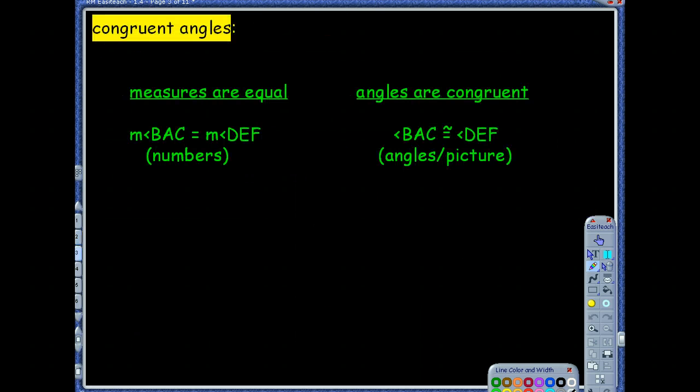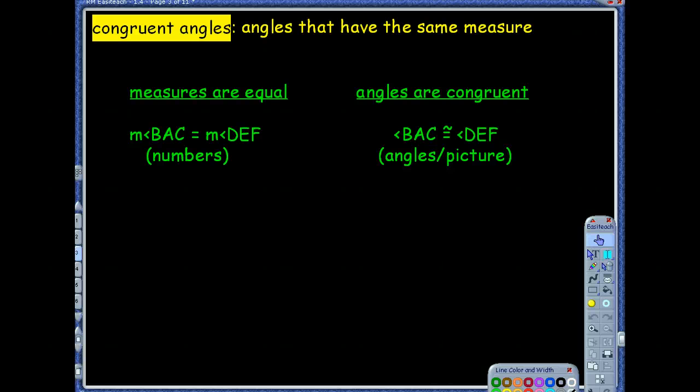We've talked about congruent segments. We want to talk today about congruent angles. And to be congruent angles, they're angles that have the same measure. So if they have the same measure, the angles are congruent.